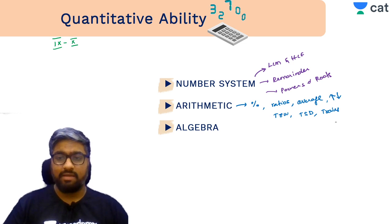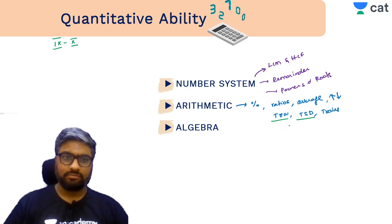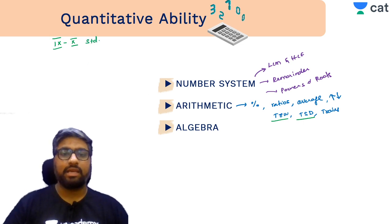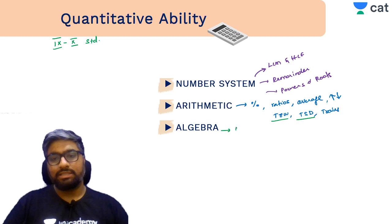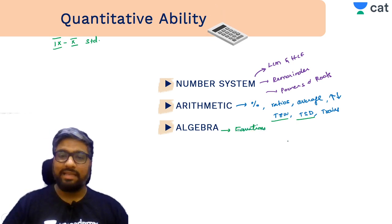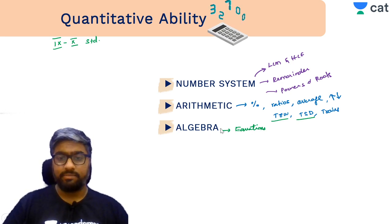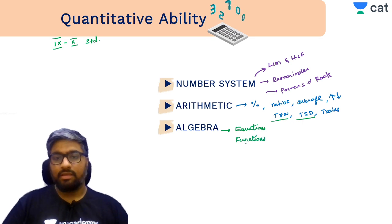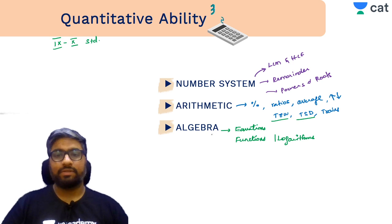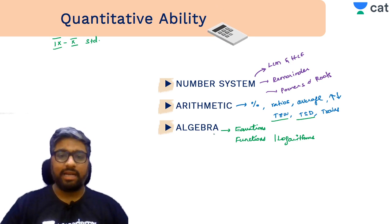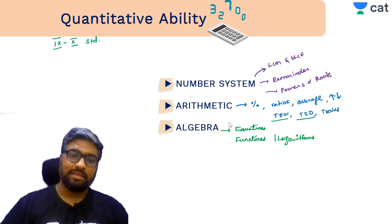Algebra covers equations (linear and quadratic), functions, inequalities, and logarithms. Logarithms can be tricky but we'll talk about them too. Not as difficult as you'd expect — if you have the basics, you can get the answer. Then we have Geometry — which many people are afraid of because of so many formulas and exceptions. But don't worry — you will need to remember volume and surface area formulas but it's manageable. Under Geometry you have 2D geometry with different shapes and their properties, mensuration with 2D and 3D shapes, and coordinate geometry.